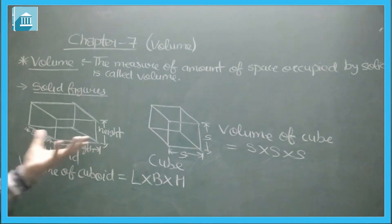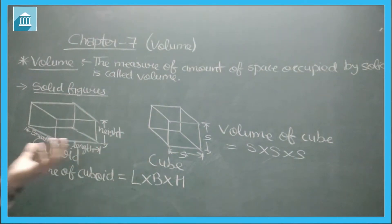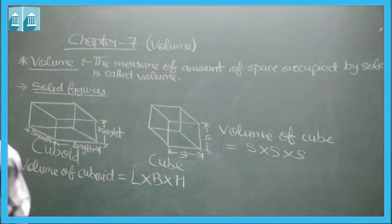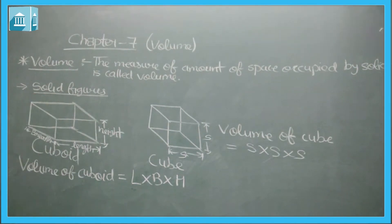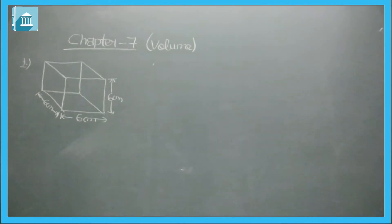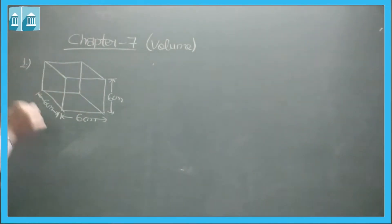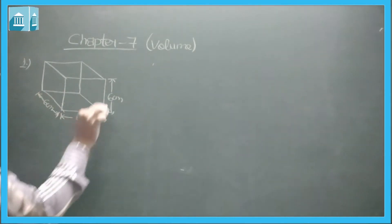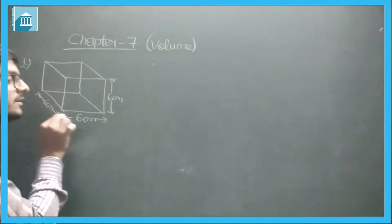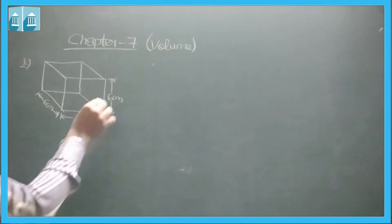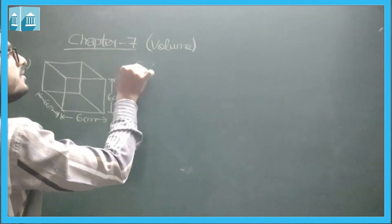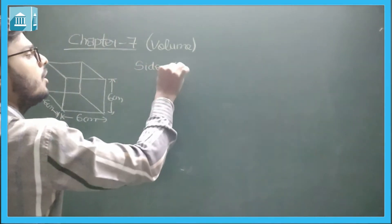Now we will solve the questions of Exercise 7.1. The first question shows a cube — we know it is a cube because all measurements are equal: 6 cm, 6 cm, and 6 cm. So the side of the cube is 6 centimeters.